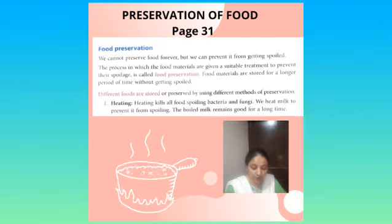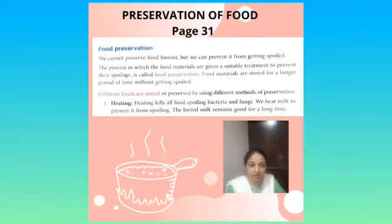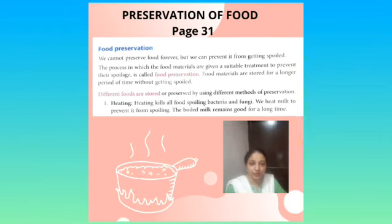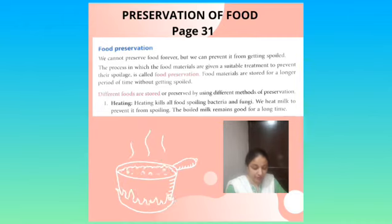'Food materials are stored for a longer period of time without getting spoiled.' We can store food using different methods and preserve it from spoilage; this process is called food preservation. Different foods are stored or preserved by using different methods of preservation. First process is heating: heating kills all food-spoiling bacteria and fungi. We heat milk to prevent it from spoiling. The boiled milk remains good for a long time.